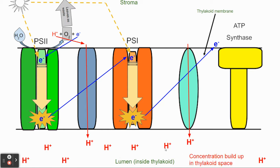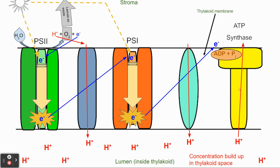We want to build up hydrogen because a concentration buildup of hydrogen in the thylakoid space drives ATP synthase. We can see all of this hydrogen has built up, giving us a concentration gradient — high concentration inside, low concentration outside. So hydrogen passes itself through ATP synthase, and as it does, it releases a little bit of energy, which means we can take ADP and add a phosphate to it to make ATP.